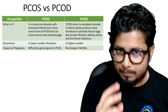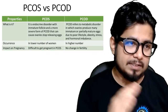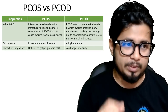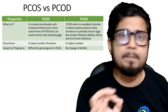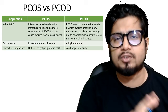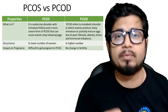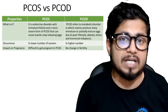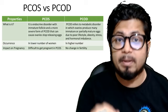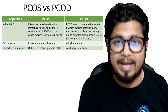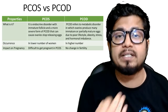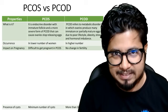The third important parameter is the impact on pregnancy. With PCOD, there is no major problem with fertility or conceiving a child, but with PCOS there will be interference with pregnancy.